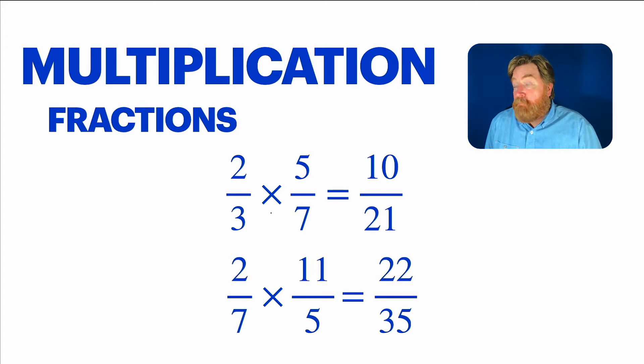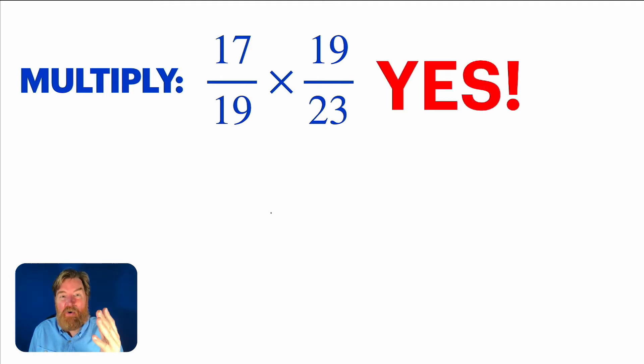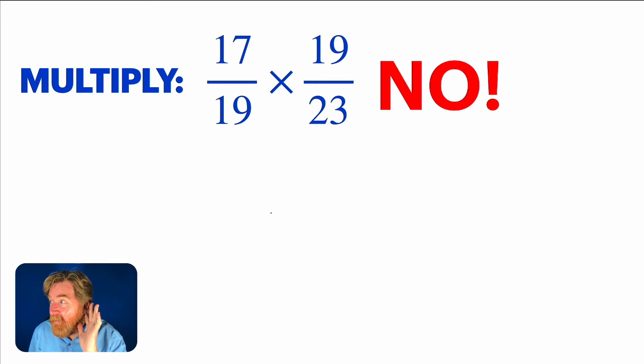Could there be a problem? I wouldn't call it a problem, but check this out. Look at this one. Seventeen-nineteenths times nineteen twenty-thirds. Well, first of all, can we multiply nineteenths and twenty-thirds together? Yes, of course. You can multiply anything by anything. But look at those numbers. Those are going to get big really fast. Seventeen times nineteen, and nineteen times twenty-three. I mean, do you want to multiply those together? A collective no. I'm with you.